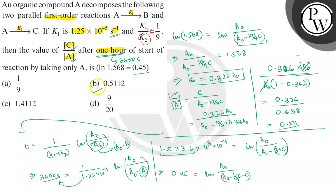The ratio c/a after 1 hour is 0.5112, which corresponds to option B. This is the correct answer and the required solution.